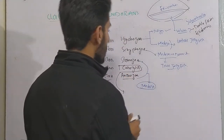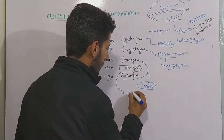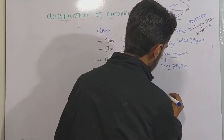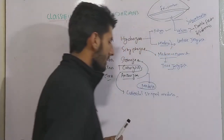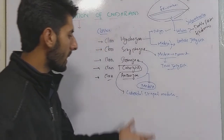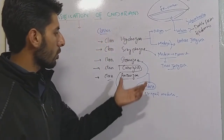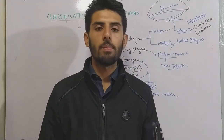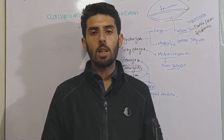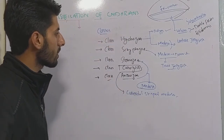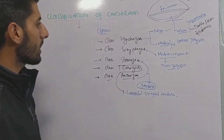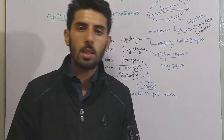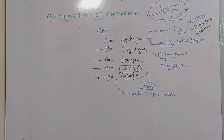Cubozoa is named due to the presence of a cuboidal-shaped medusa form — the medusa stage is cube-like. Earlier, Cubozoa and Staurozoa were placed under class Scyphozoa because they showed similarities to it, but later they were classified as separate classes. Now we will discuss each and every class in a little more detail.